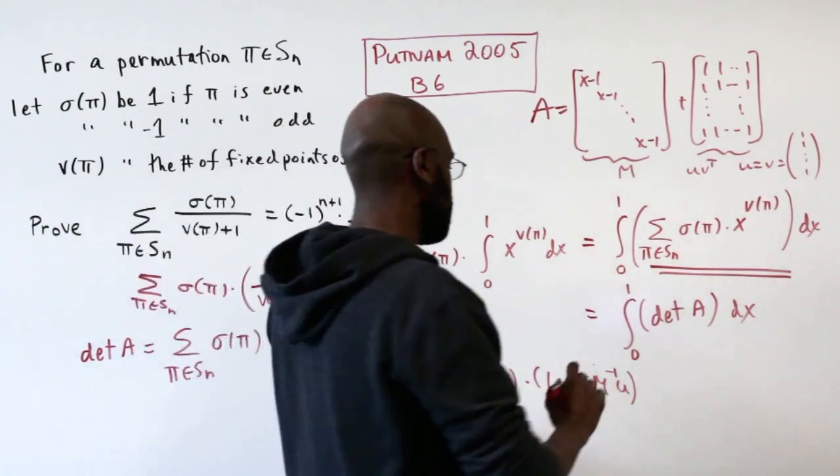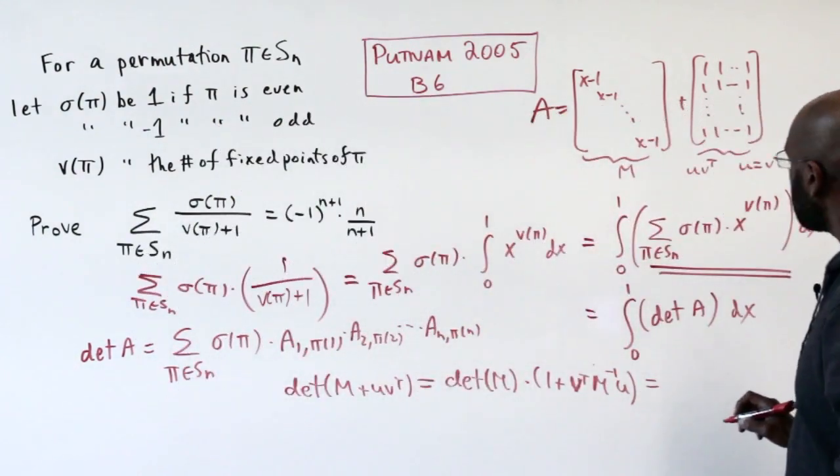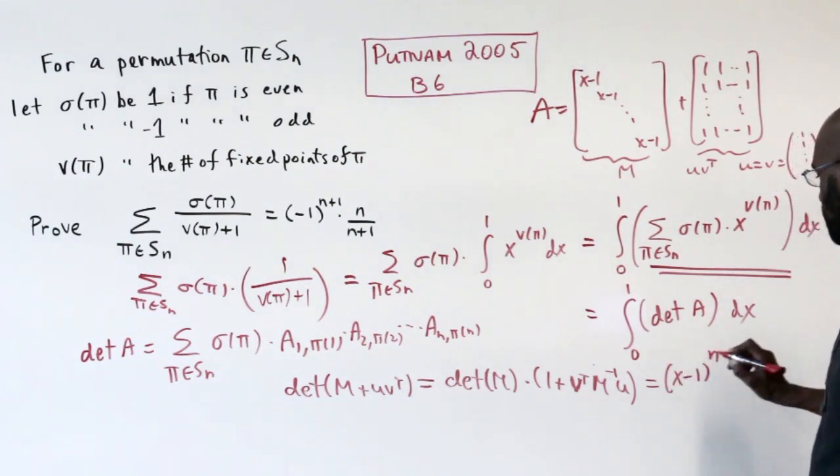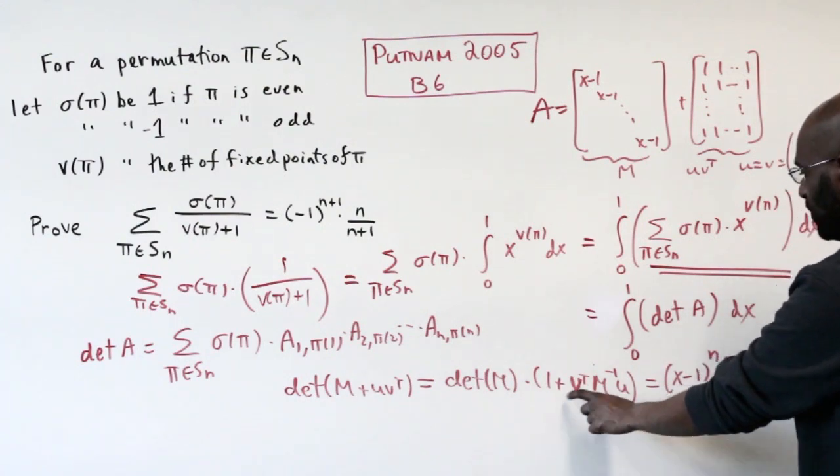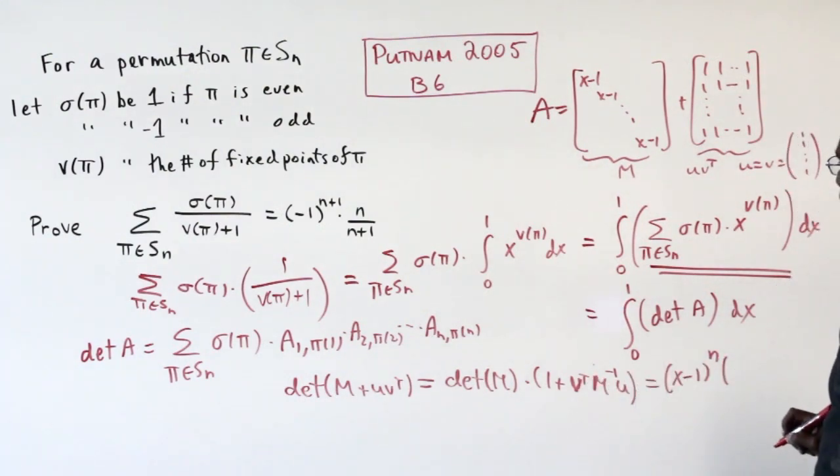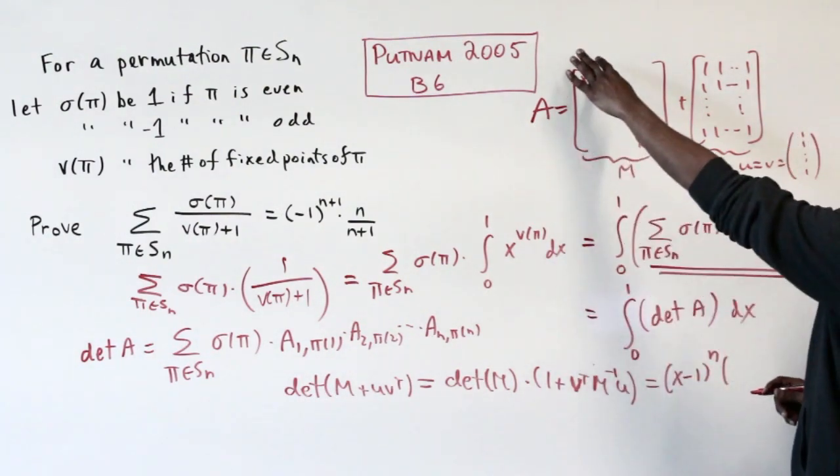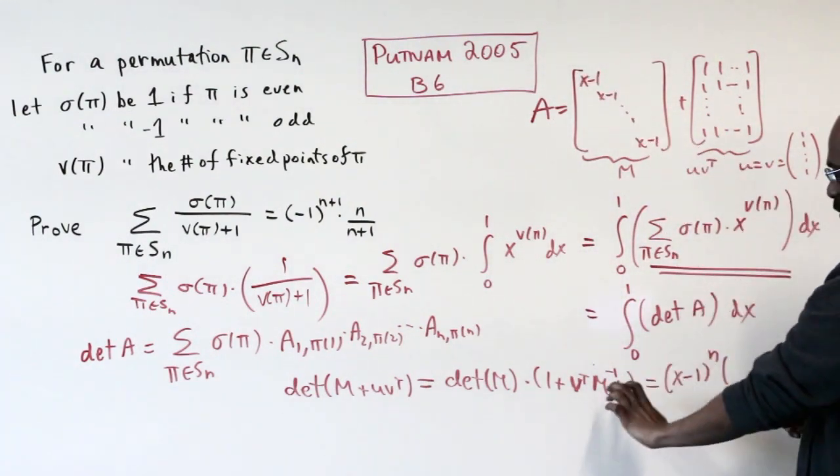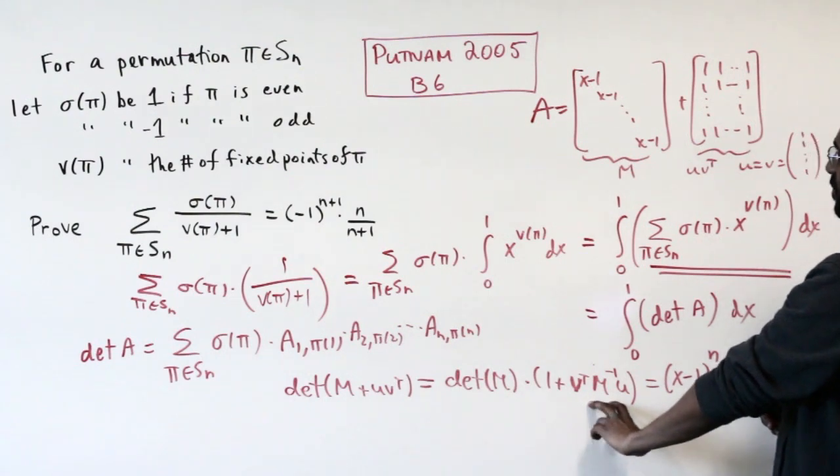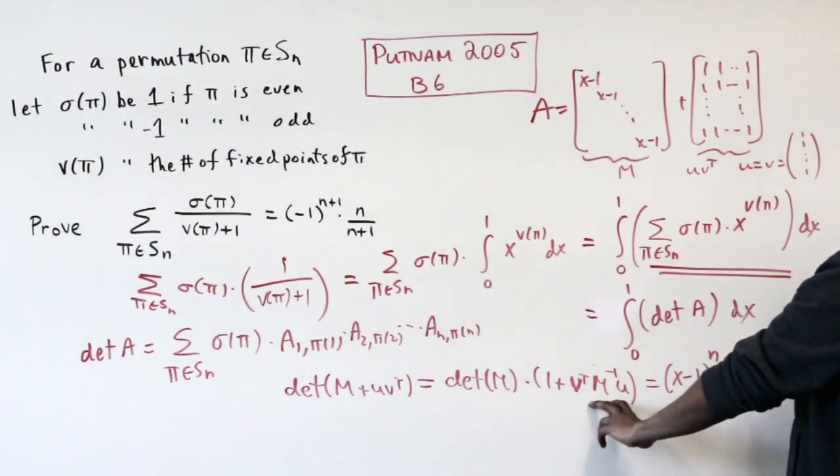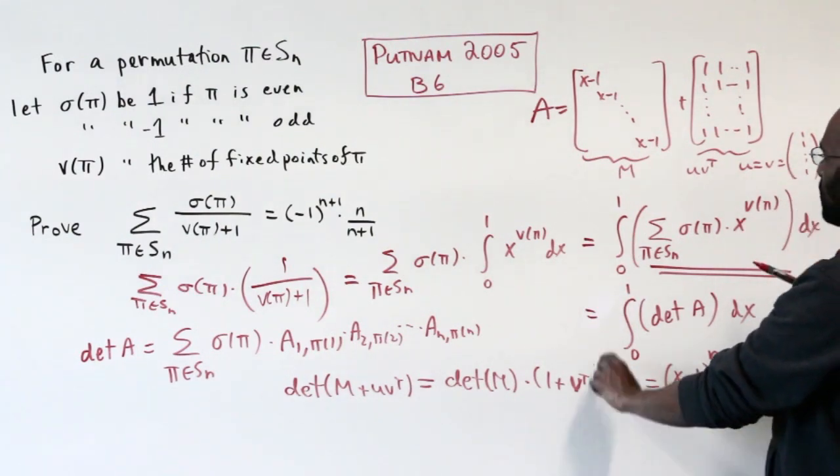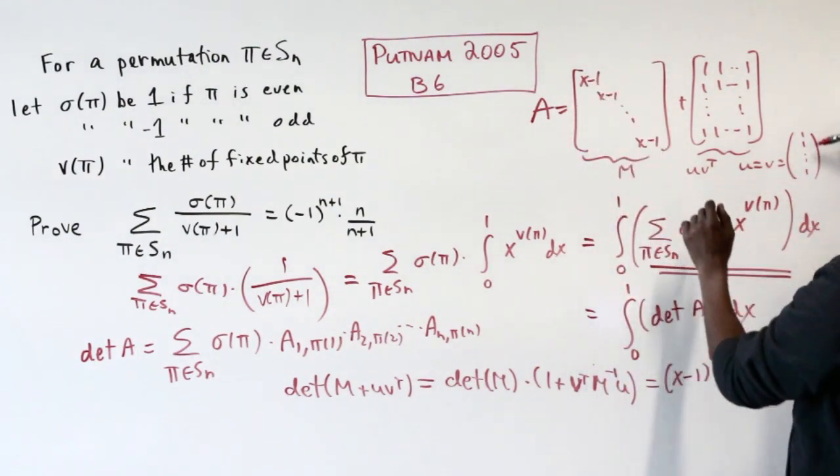We know what the determinant of M is. The determinant of M is the product of these diagonal entries, which is (x-1)^n. For 1 plus v^T M^(-1) u, M^(-1) is the matrix that has 1 over all these values in its diagonal.